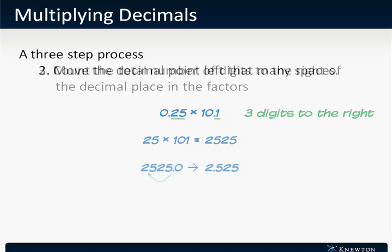Finally, we're going to move our decimal place back three spaces as seen in the slide because three was our total as we counted above. This changes our number 2,525 to 2.525.